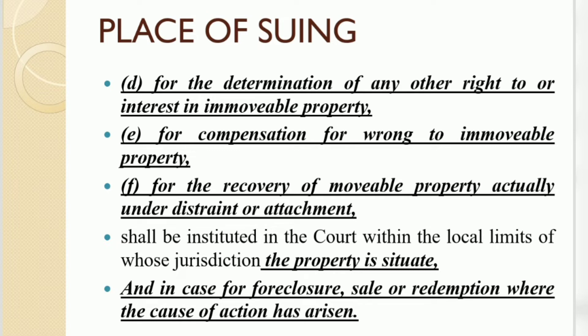We also have movable property attachment and personal wrong. The word 'personal wrong' is used here — so if a person commits assault, battery, or defamation against someone, in which court will the suit be filed? The suit can be filed in three places: first, where the cause of action arises; second, where the defendant resides; and third, where the defendant does business or works for gain. These are the three places where a suit can be instituted.